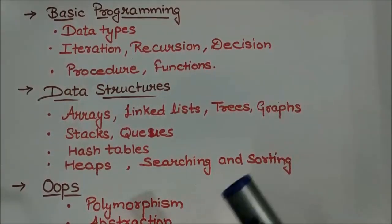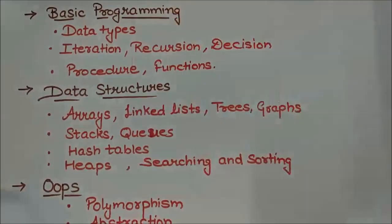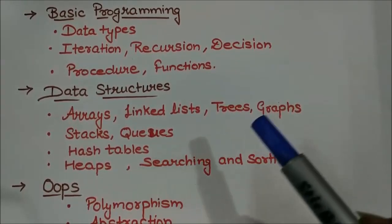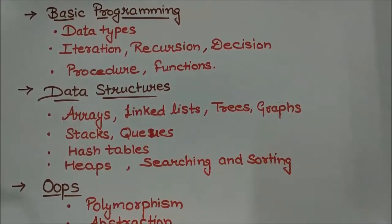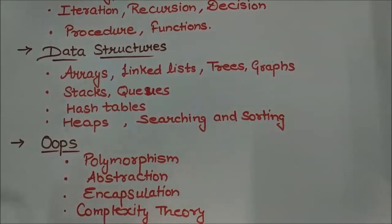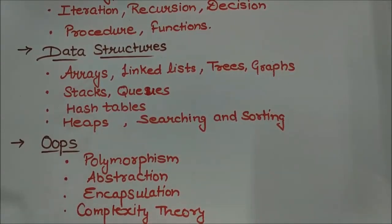For this section, the same topics apply: in basic programming — data types, iteration, recursion, decision, procedures and functions; and in the second category, data structures — arrays, linked lists, trees, graphs, stacks, queues, hash tables, heaps, searching and sorting — plus polymorphism, abstraction, encapsulation, and complexity theory. However, you have to prepare these in an enhanced manner because the level of questions will increase in this second part.